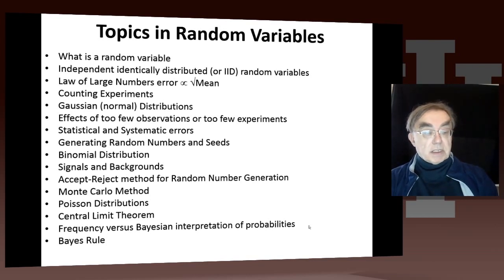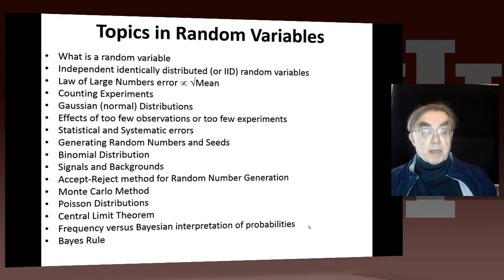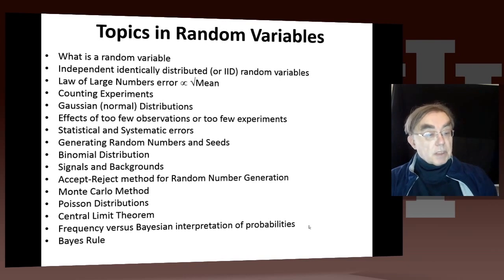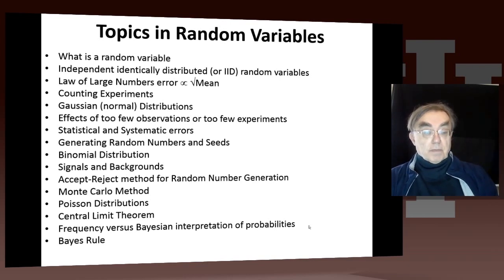We will discuss signals and backgrounds — I've already seen that in the last unit where we had a Higgs signal on a sloping background. We will define more precisely the accept-reject method for generating random numbers with an arbitrary distribution and an arbitrary number of dimensions. We will also discuss the Monte Carlo method, which is essential for understanding apparati in this particular example.